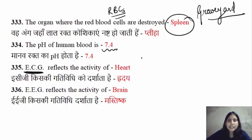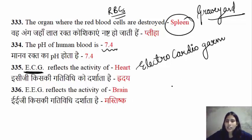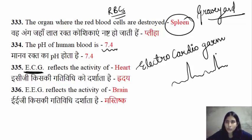ECG — the full form of ECG is electrocardiogram. The electrocardiogram records the heart activities of your body. You can see it as a graph on TV screens. So heart activities are recorded by ECG.